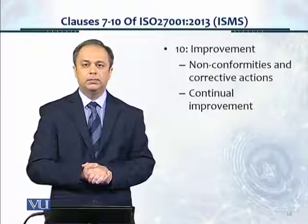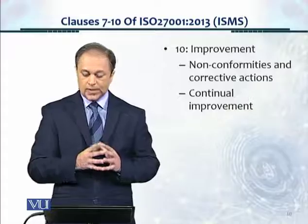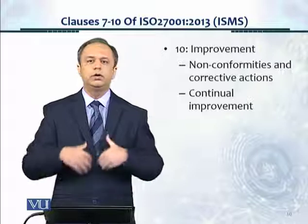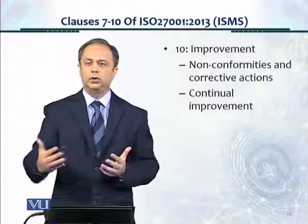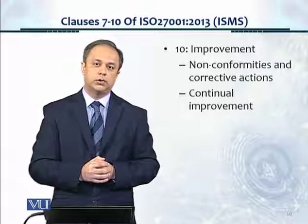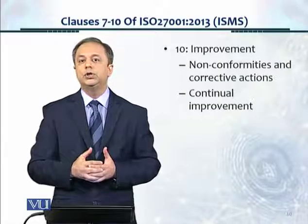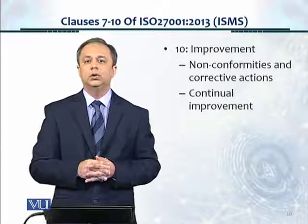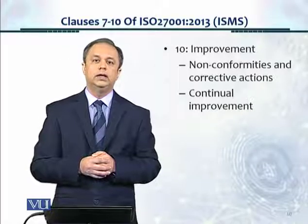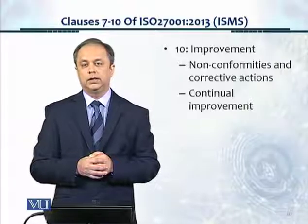Finally, clause number 10 is part of the mandatory section of ISMS, which talks about non-conformities and corrective actions. That's a cycle of continuous improvement — continual improvement of the entire ISMS as an ongoing activity. These were the 10 clauses of the mandatory section. In the next module, we'll look at the discretionary controls and the actual appendix of the ISMS, which has about 114 controls in 35 control objectives. Thank you.